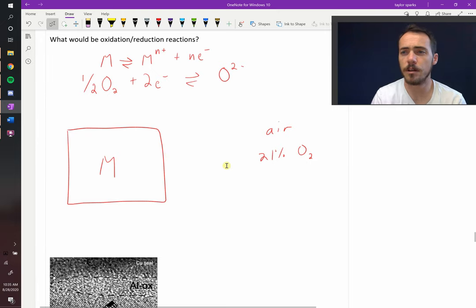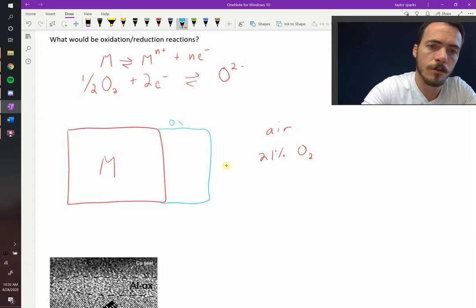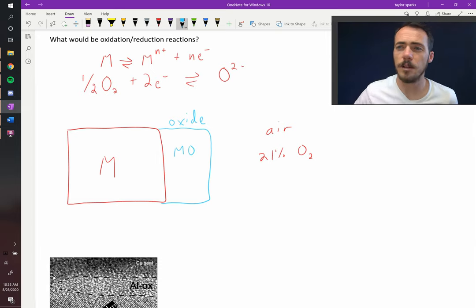So what will happen is it's going to form an oxide where these things touch one another, at the interface between the metal and the oxygen, if that is thermodynamically favorable. If thermodynamics says it's happened, then it will form. So let's say that an oxide forms. That is our oxide. We'll call it MO for metal oxide.